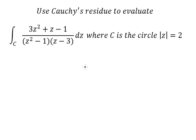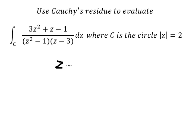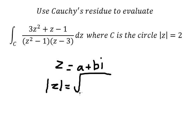Hey guys, welcome back to my channel. Today I will show you how to answer this one. The first thing we need to consider about the circle: we know that z equals a plus bi, and if we put it inside the absolute value we have the square root of a squared plus b squared, and this equals number two.